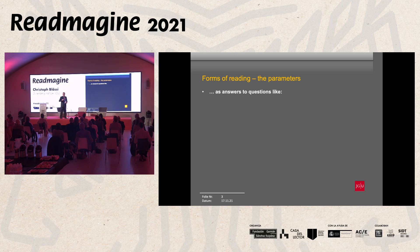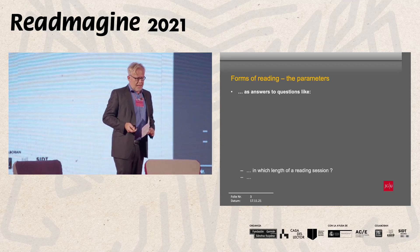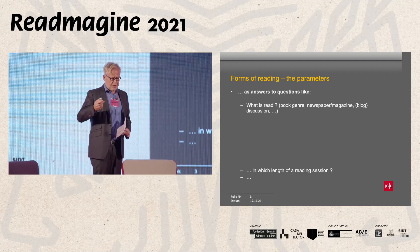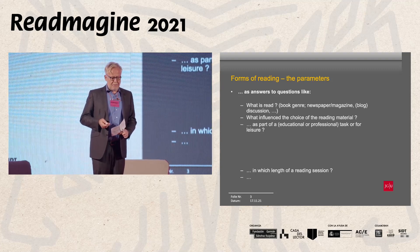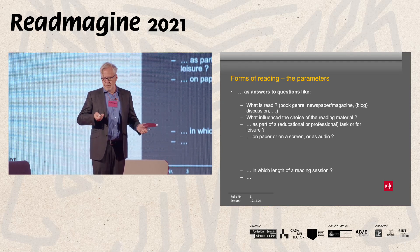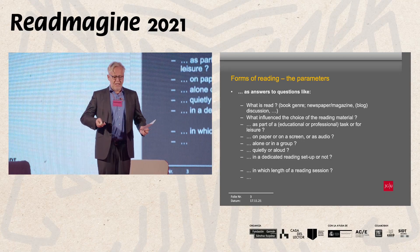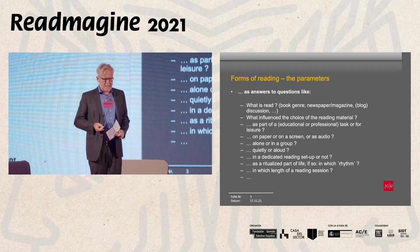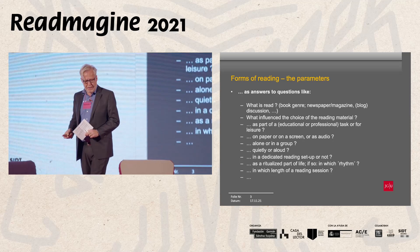With respect to forms of reading, one way of finding out which forms there are is to formulate questions that could be asked of every reading situation. If you have answered all the questions, you have a multi-dimensional space describing the context of reading. The answers cover: what is read — book, newspaper, magazine, blog, and so on; what influenced the choice of reading material; whether reading is part of an educational or professional task, or for leisure; whether it is on paper, on screen, or as audio; whether done alone or in a group; quietly or aloud; in a dedicated reading setup or not; whether it is part of a ritualized part of life and in what rhythm; and what the length of a reading session is — ten minutes or three hours.